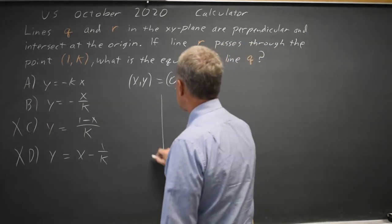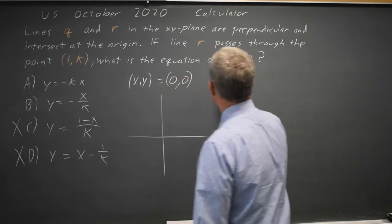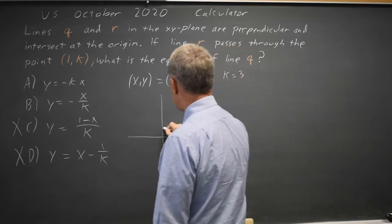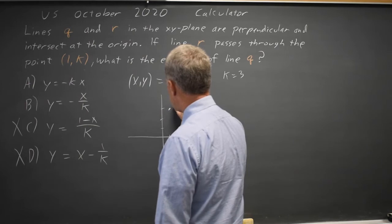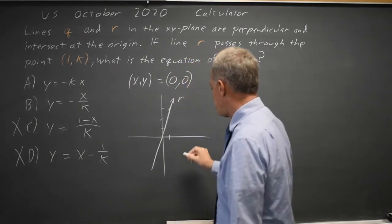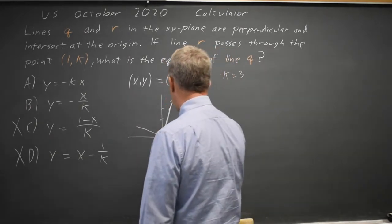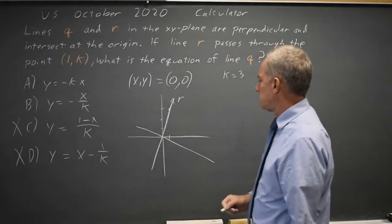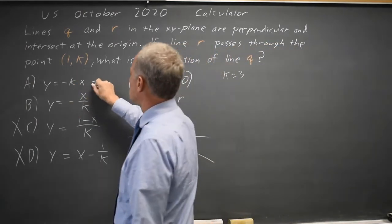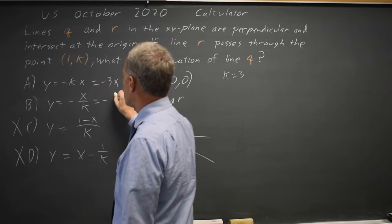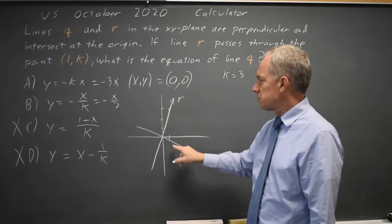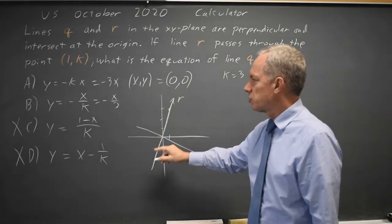One option is to make up numbers. Let's try K equals 3, and then line R passes through the point (1, 3) and the origin — so this would be line R. Line Q is perpendicular, so Q would be something like this. Line Q has a negative slope. Both of these are negative since K is positive. But clearly this is not a slope of negative 3 — this is a slope more like negative 1/3, so the correct answer would be B.